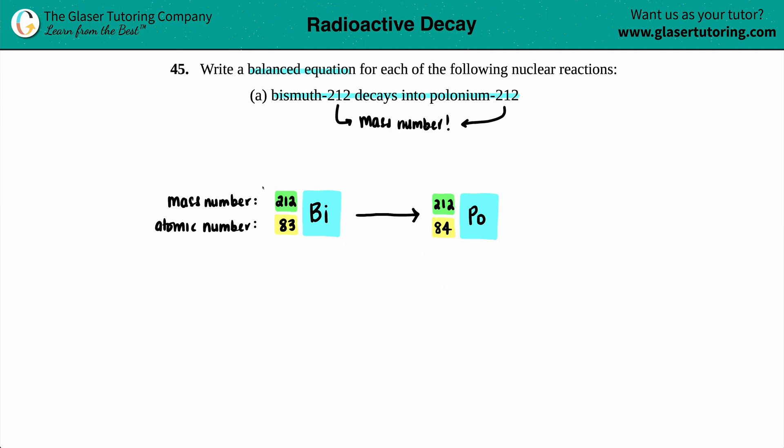But now the question is, if we just have this, it's not really balanced. When we have to balance nuclear reactions, the mass numbers across the yield sign have to equal, and the sum of the atomic numbers across the yield sign have to equal. Think of this yield sign as like an equal sign. So on the top we're good: 212 equals 212. But on the bottom, 83 does not equal 84.